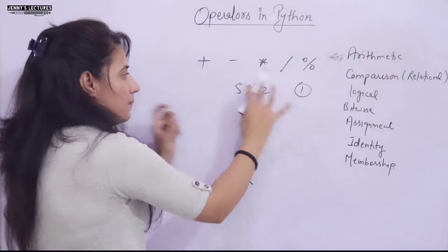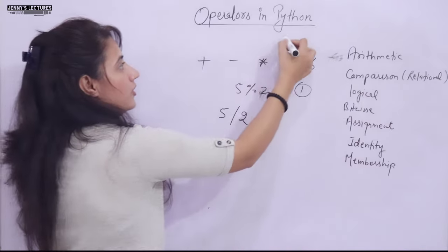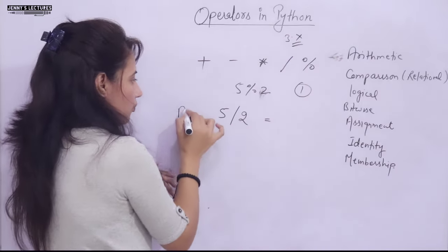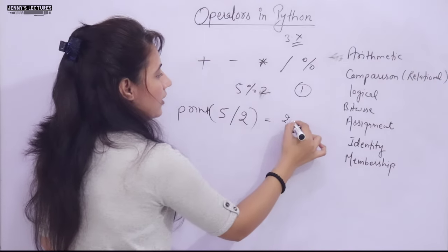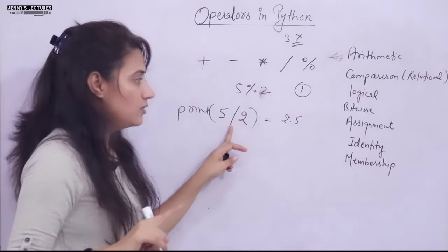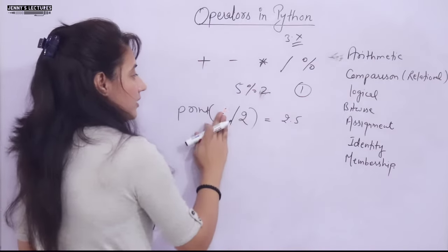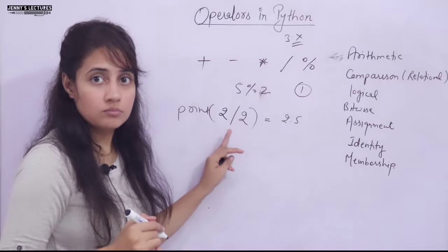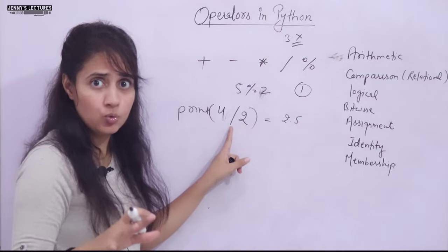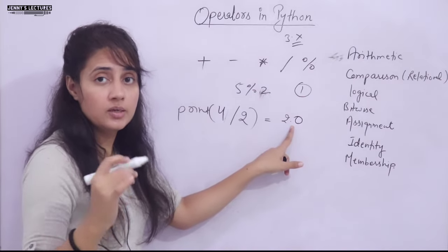One important thing in Python 3.x: if you write 5 / 2 and print it, it will give you 2.5 — a float number. In Python 3.x, the division operator always gives a floating point number. Even if you write 4 / 2, which divides cleanly, the answer would be 2.0, not 2.